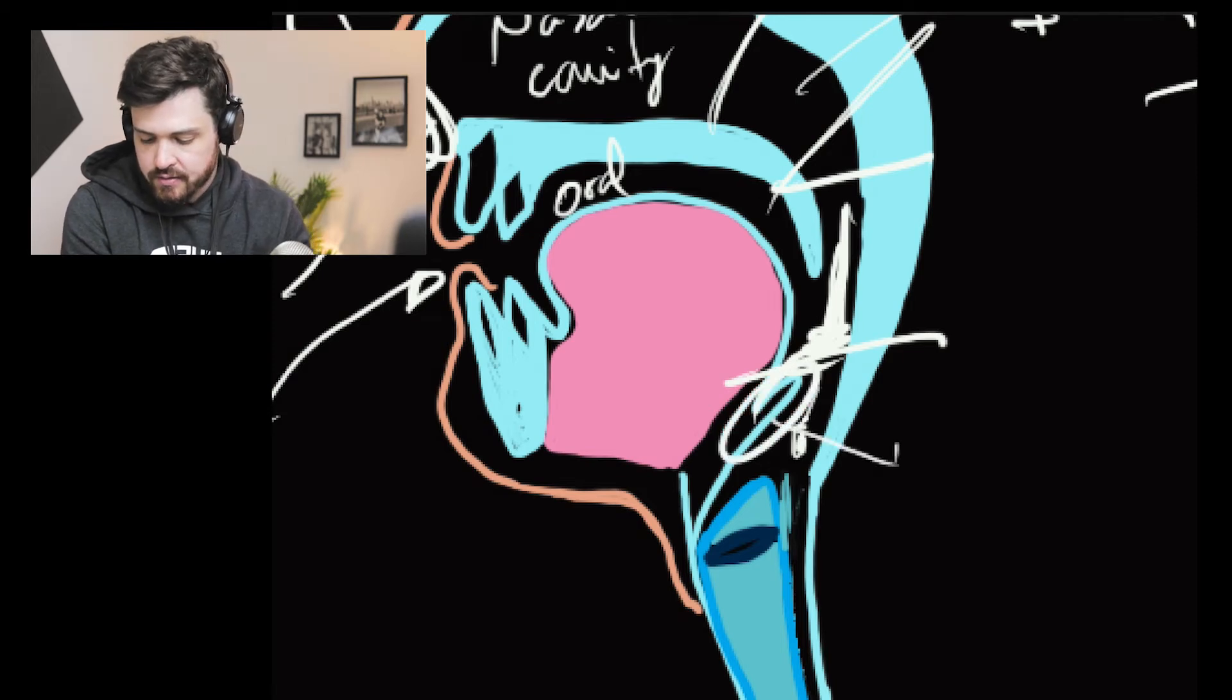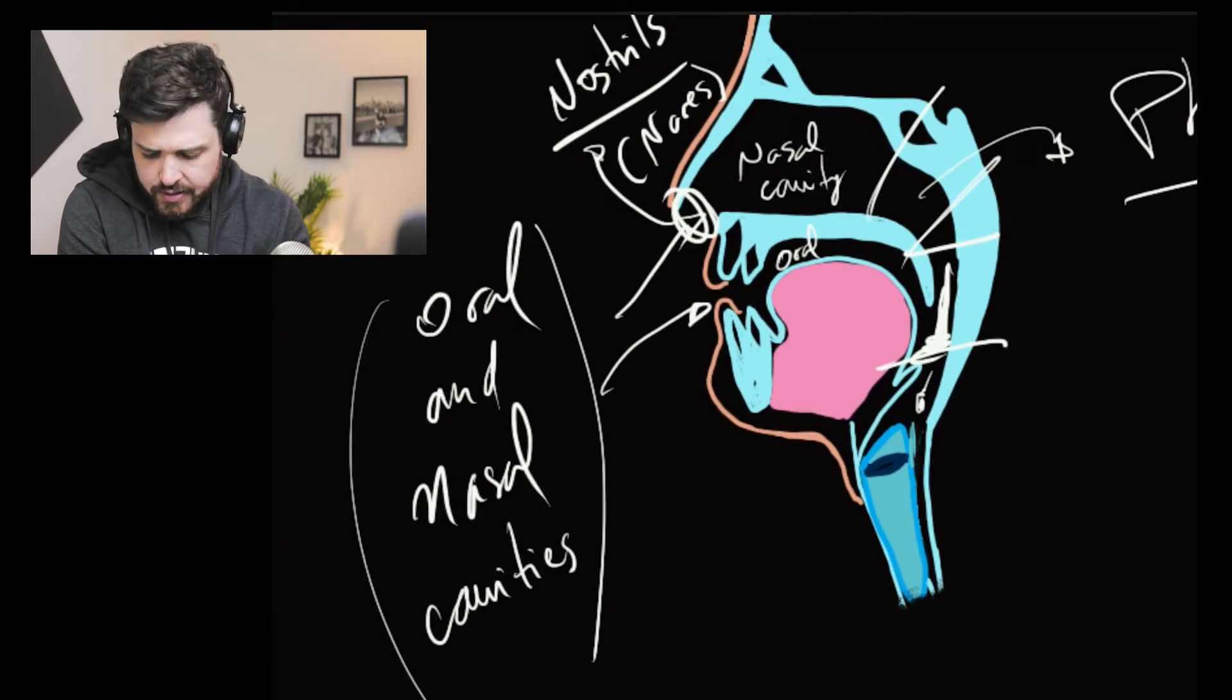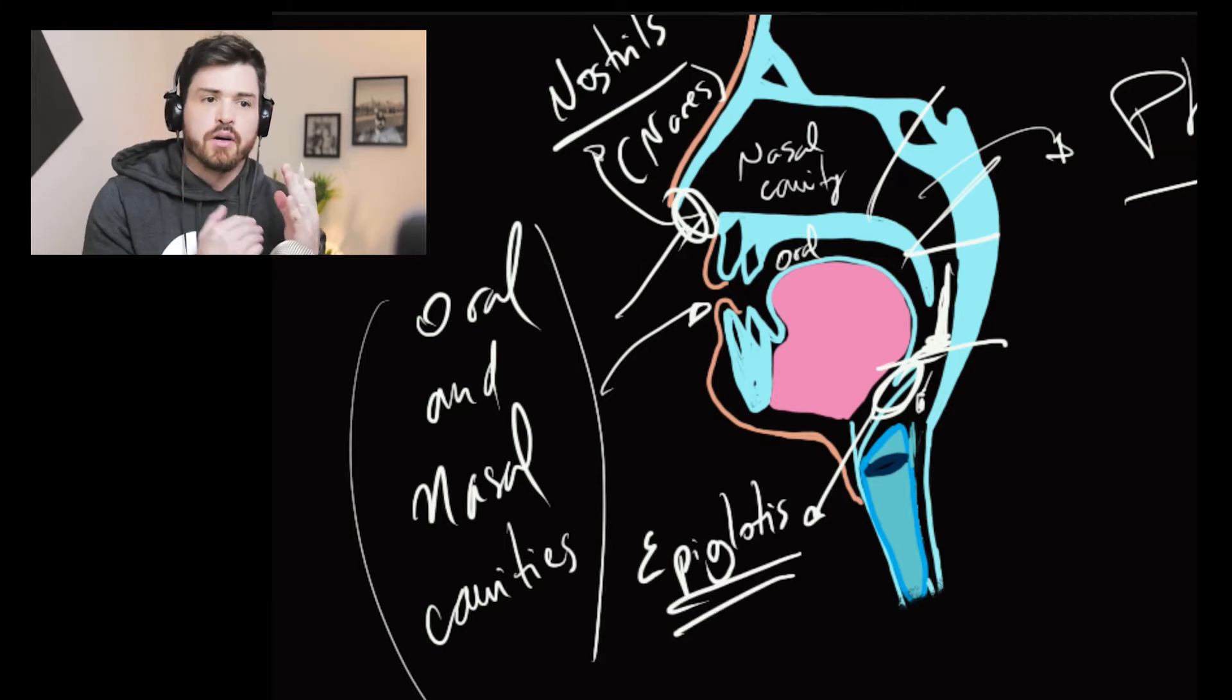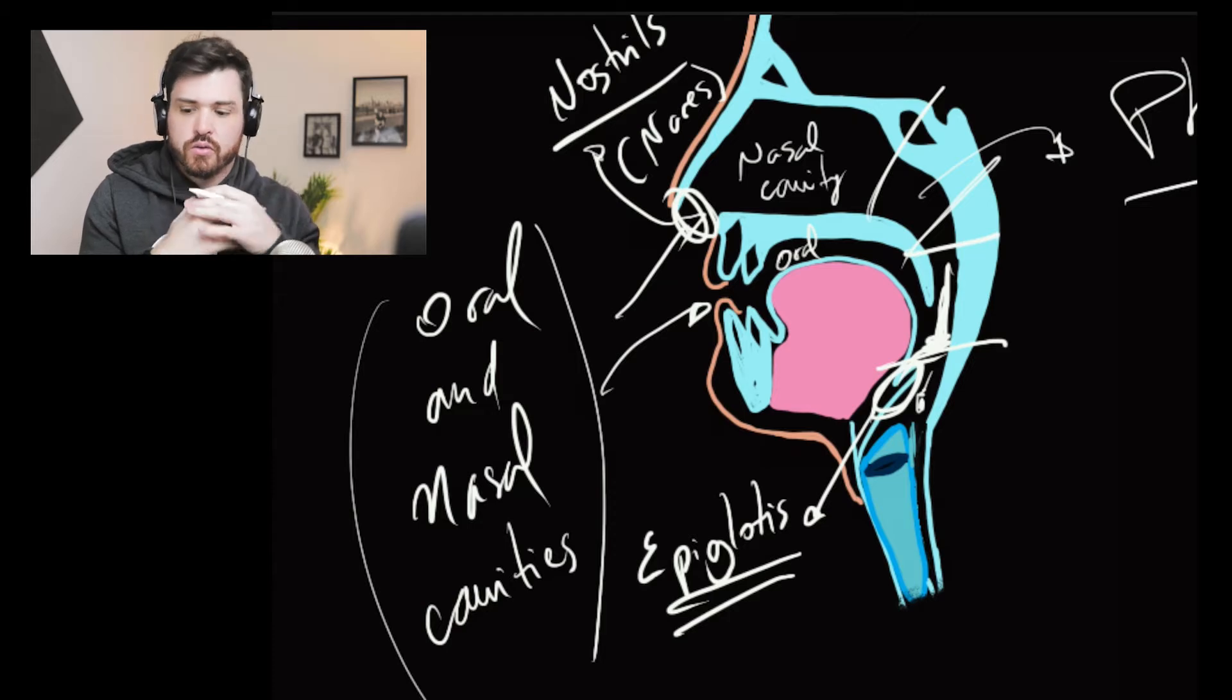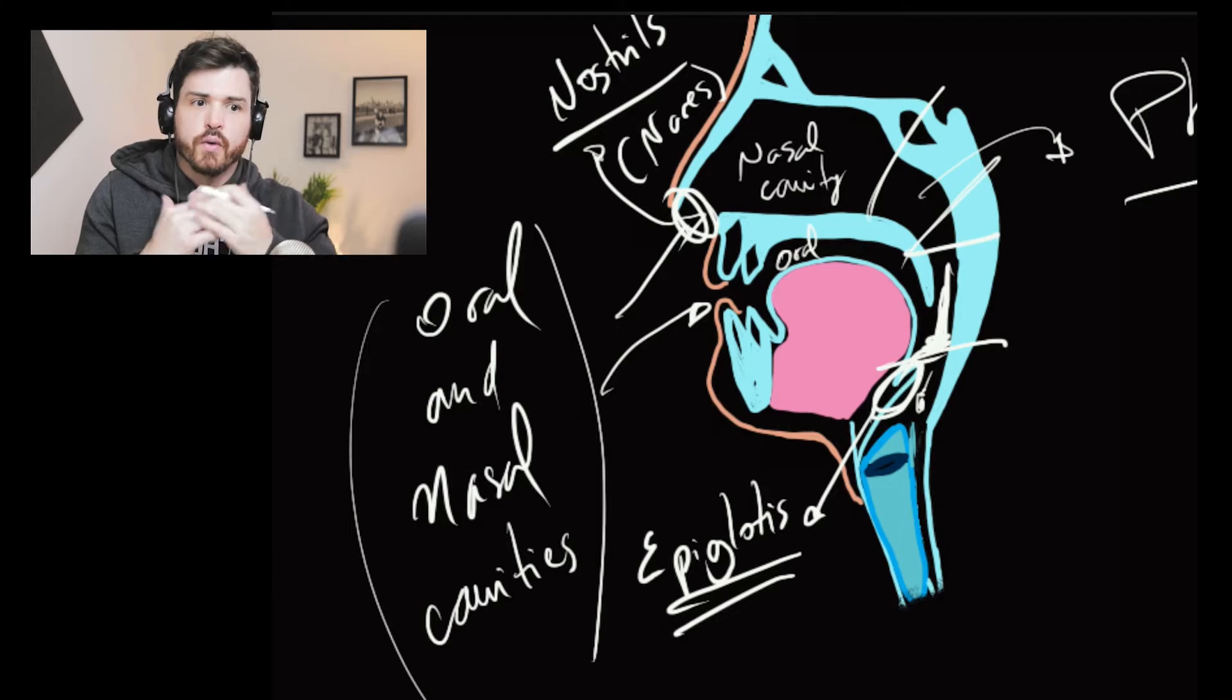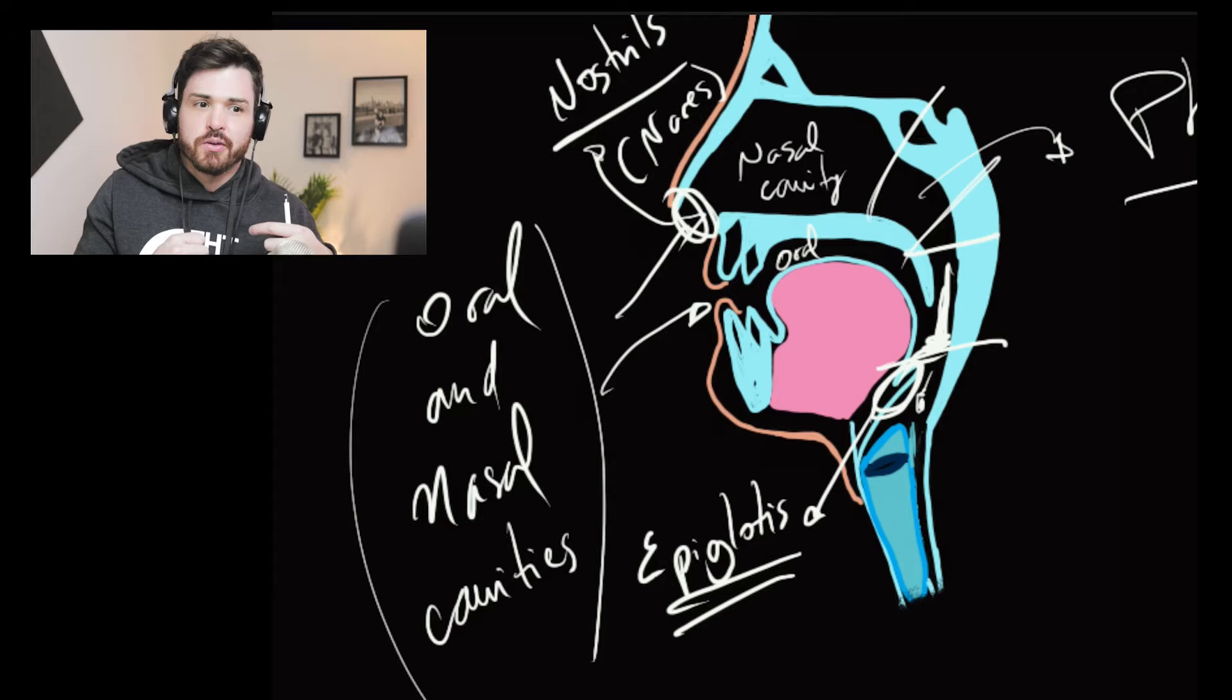Então, aqui nós temos a epiglótis. É o que tampa o sistema respiratório, o trato respiratório na hora da deglutição. It blocks the passage of food during swallowing, bloqueia a passagem de comida durante swallowing. Quando engole o alimento, a ingestão de alimento. So this is the epiglottis.